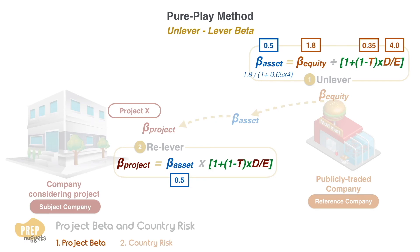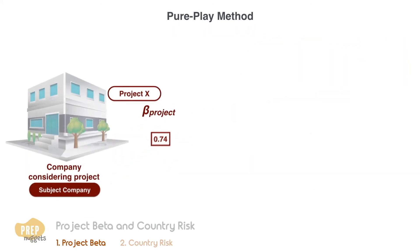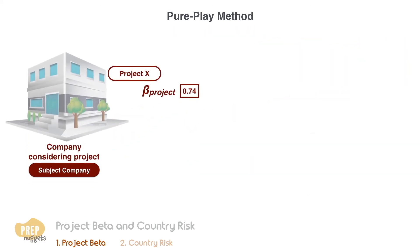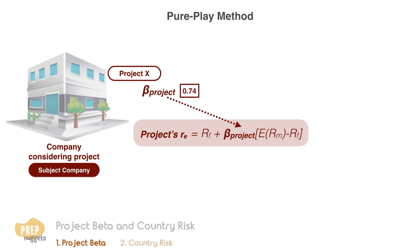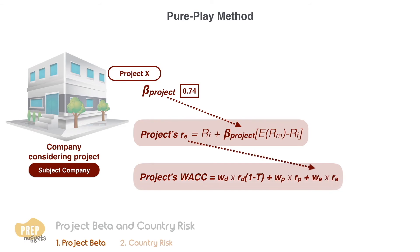When you relever the beta of an asset, T is the marginal tax rate and D/E is the debt-to-equity ratio of the subject company, and you multiply the beta of the asset with this term. If the subject company has a debt-to-equity ratio of 0.8 and its marginal tax rate is 40%, the beta of the project will be 0.74. Once we get the beta of the project, we can use it to estimate the cost of equity of the project and plug this in to find the WACC applicable to the project.